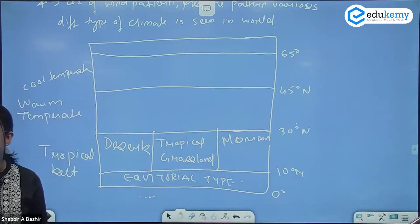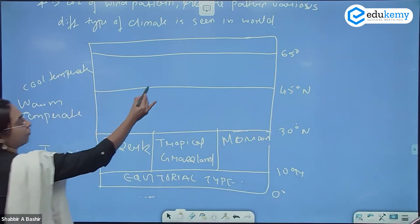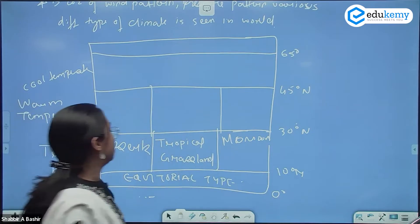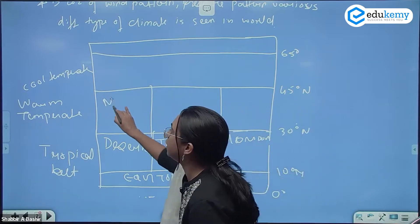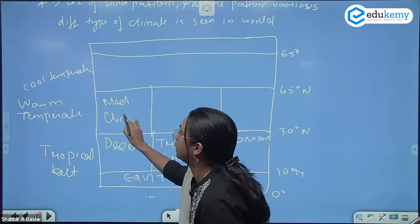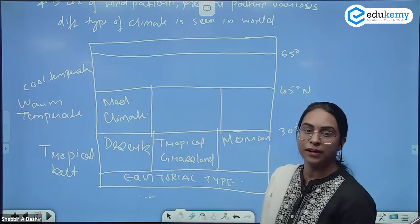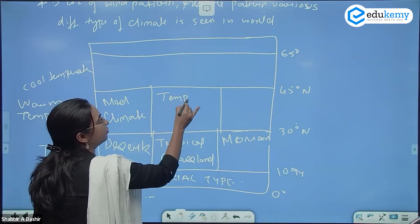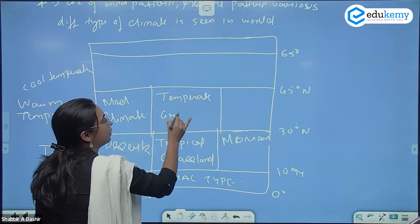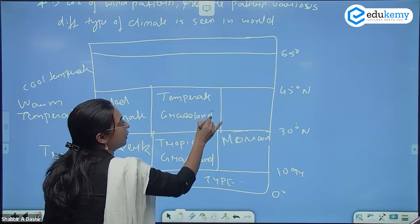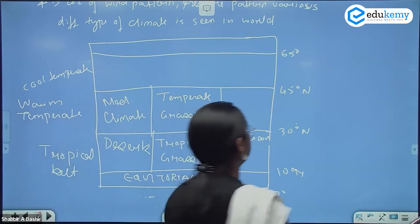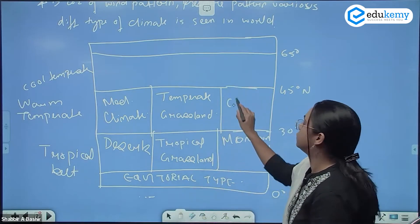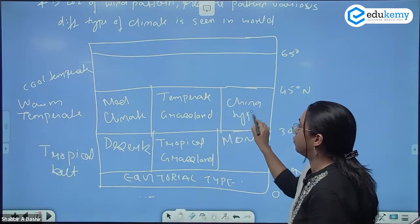The warm temperate zone is further subdivided into three types. On the west you have the Mediterranean climate, in between you have temperate grasslands, and on the east you have the China type of climate.